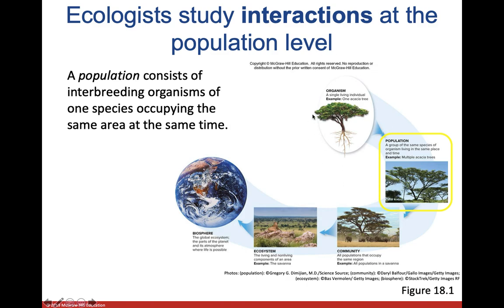Looking at an individual tree is not going to give you a lot of data — it won't tell you about average lifespan, average height, average color, or average environment. You might only pick one tree that lives in a perfect environment, but trees could probably live in very different environments and you'd never know that if you looked at just one. A population of trees allows you to get a lot more information about the trees in an area.